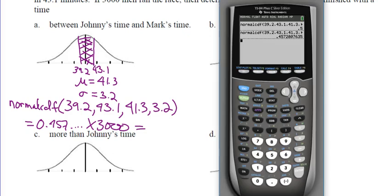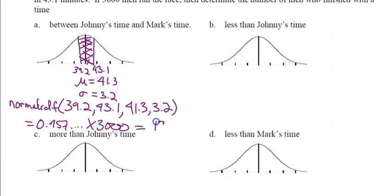So all I'm going to do is go times 3,000. The ANS means it's pulling the last number from the calculator. Multiply it by 3,000 because it's that percentage as a decimal — it's 45.728...percent, but we want it as a decimal: 0.45, almost half. So it's going to be close to 1,500. It's 1,371.84, so we round that to the nearest full human being: 1,372. We would expect about 1,372 people to have finished between Johnny's time and Mark's time.